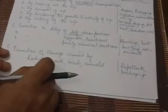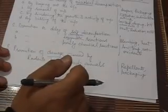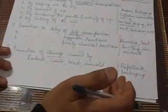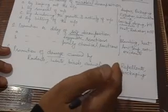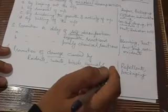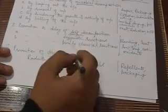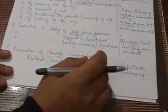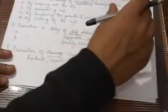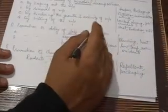So overall, we have only three principles of preservation. Number one: prevention or delay of microbial decomposition. Number two: prevention or delay of self-decomposition. Number three: prevention of damage caused by rodents, insects, birds and animals. There are a large number of methods used to accomplish these principles, and all three agencies must be managed when we intend to preserve food for a long duration. One important point: none of these methods individually is capable of preserving food for a long duration, so it becomes compulsory to use more than one method in combination.